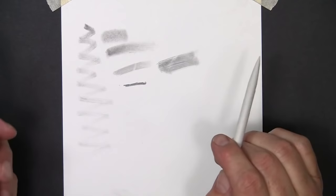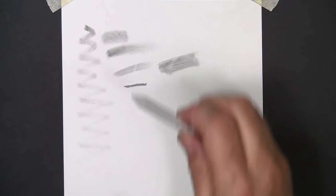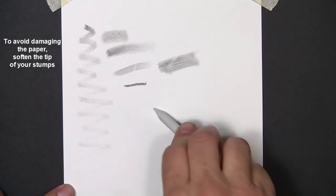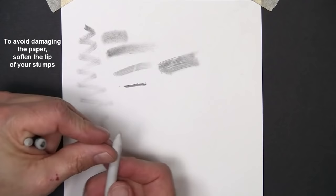One other thing I want to show you with a stump and a tortillion, to help avoid pushing too hard and damaging the paper, what I normally do, as soon as I get a stump, I'll get a brand new one here, I'll take it off to the side of the paper and I'll sort of smash the end a little bit. I'm not pushing straight down on it, that would just smash it all in there. I'm just kind of softening up that end a little to where it's a little bit more pliable and can move back and forth. This just creates a softer tip.